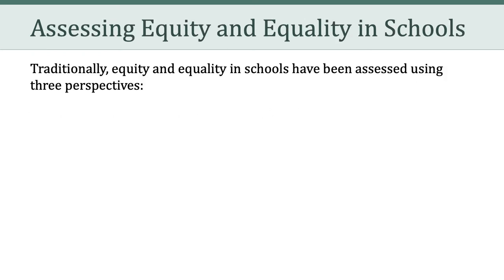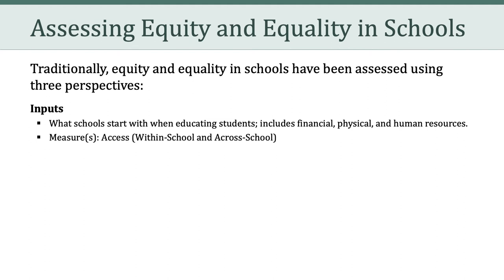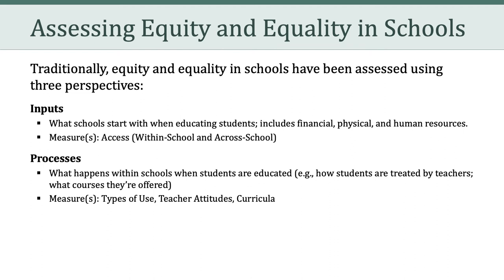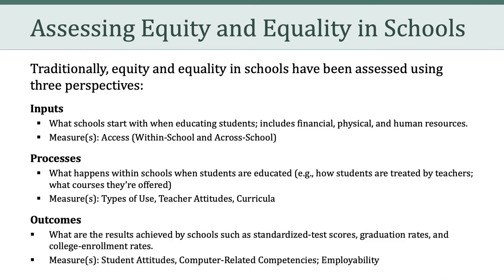Importantly, Sutton argues in that article that assessing equity and equality in schools involves three perspectives. The first perspective is looking at inputs — what schools start with when educating students — including financial, physical, and human resources. The second dimension has to do with processes — what happens within schools when students are educated, in other words, how students are treated by teachers and what courses they're offered. The third perspective is outcomes — the results achieved by schools, such as standardized test scores, graduation rates, and college enrollment rates.